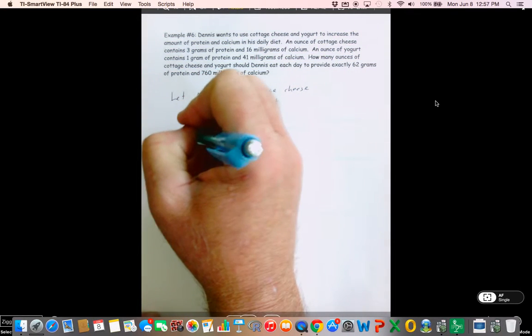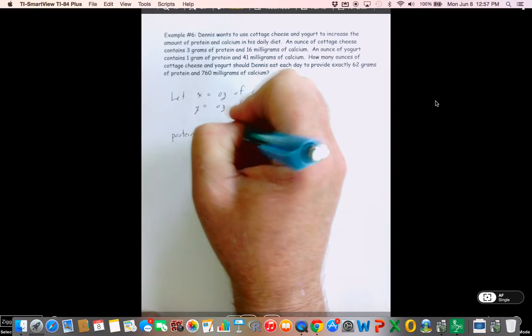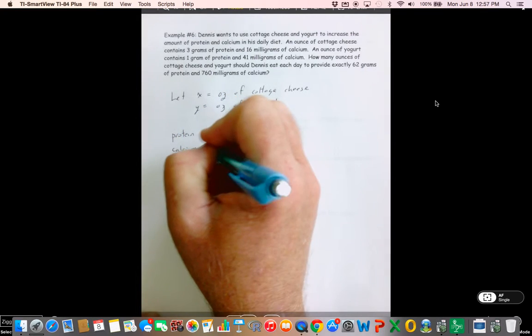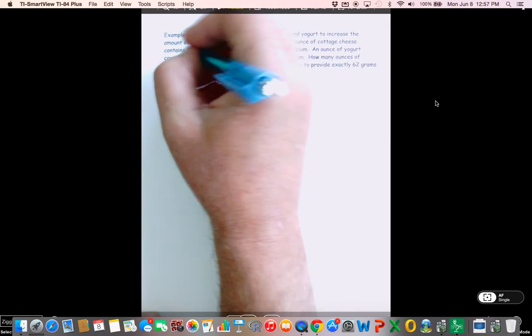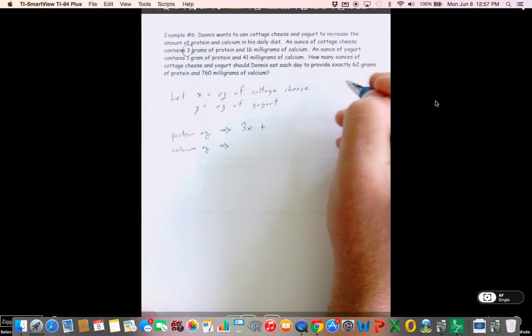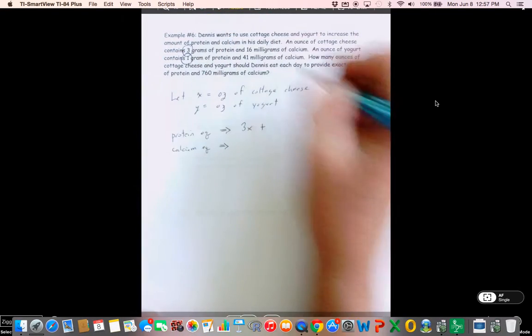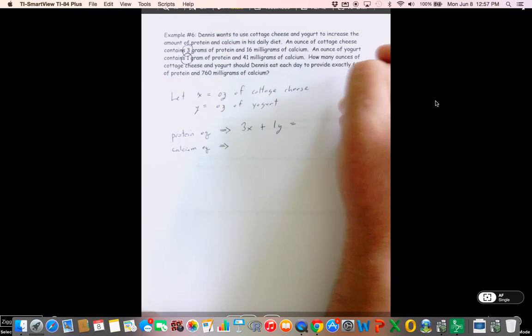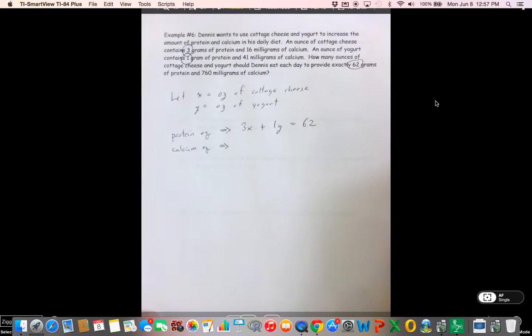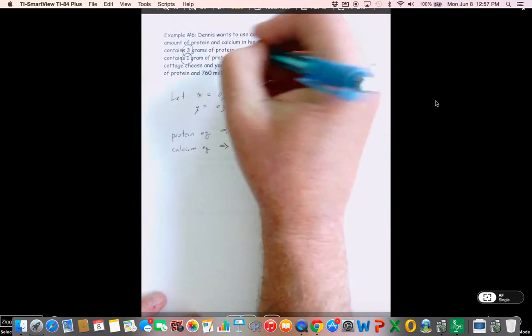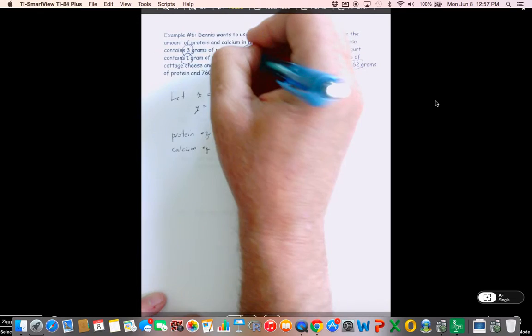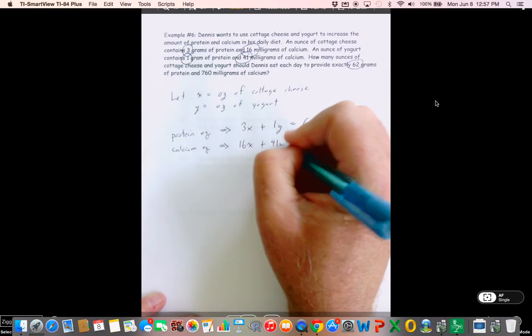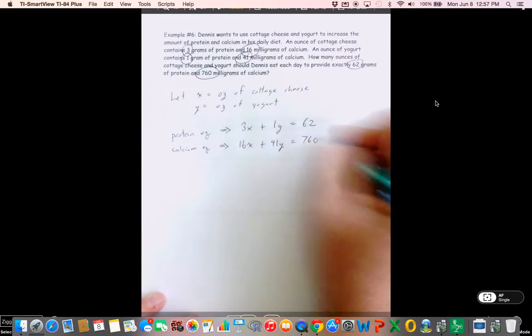Now we've got to look into the problem and see what kind of relationships we have, okay? Well, we can see that each ounce of cottage cheese has protein and calcium. Each ounce of yogurt has protein and calcium. And then down here we have a total for protein and calcium. So I'm going to have a protein equation and I know I'm going to have a calcium equation. So I'm going to circle these. I have 3 protein and 1 protein has to be my total protein. Apples plus apples are apples, oranges plus oranges are oranges. Protein plus protein is protein. I have 16 milligrams of calcium, 41 milligrams of calcium, has to be my total amount of calcium.